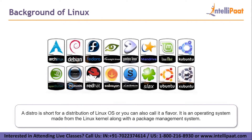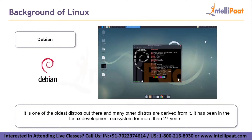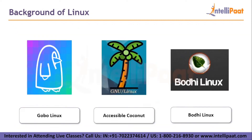Let's take a look at some of the famous distros. Linux Mint is a stable and robust OS suitable for both new and experienced Linux users. Debian is one of the oldest distros and many distros are derived from it — it has been in the Linux development ecosystem for more than 27 years. Ubuntu is preferred because of professional support from the creators themselves and is used for both learning and professional purposes due to its easy-to-use approach. Apart from these, there are some unique ones: Gobo Linux, which mimics the Mac operating system; Accessible Coconut, made for people with disabilities; and Bodhi Linux, made for visual pleasure. Bodhi means knowledge or wisdom in Buddhist terms, and it features an earthy, organic theme with appropriate animations.